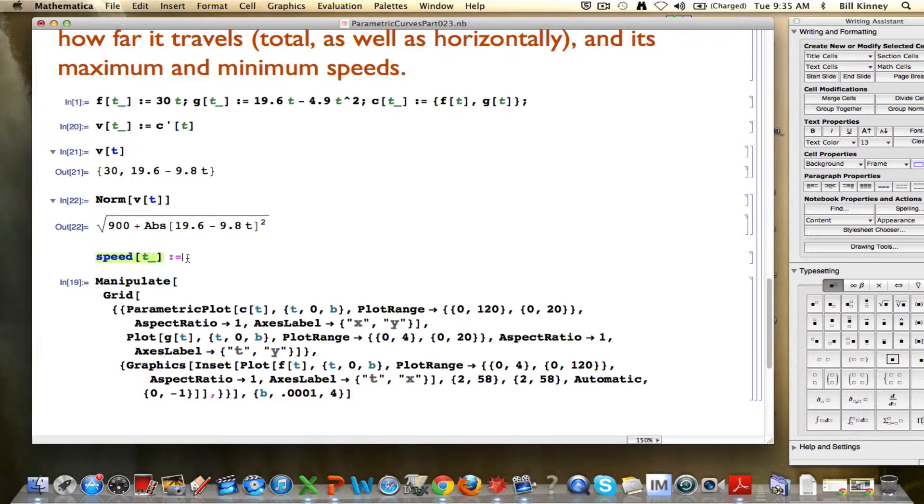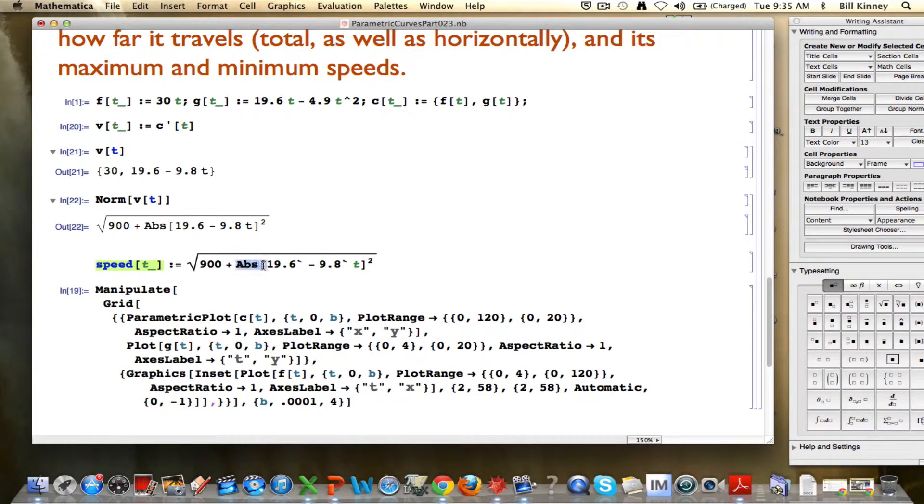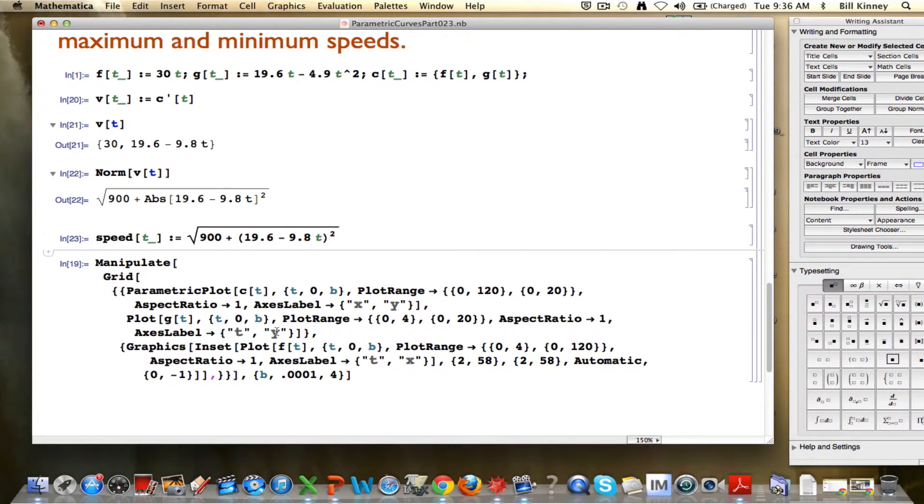So I think I'm going to get rid of the absolute value sign and just put a square here. It won't make a difference because I'm squaring it. These things here are just an indicator that there's more decimal places of accuracy. That's my speed function. And I can go ahead and plot that in the lower right corner of the grid.